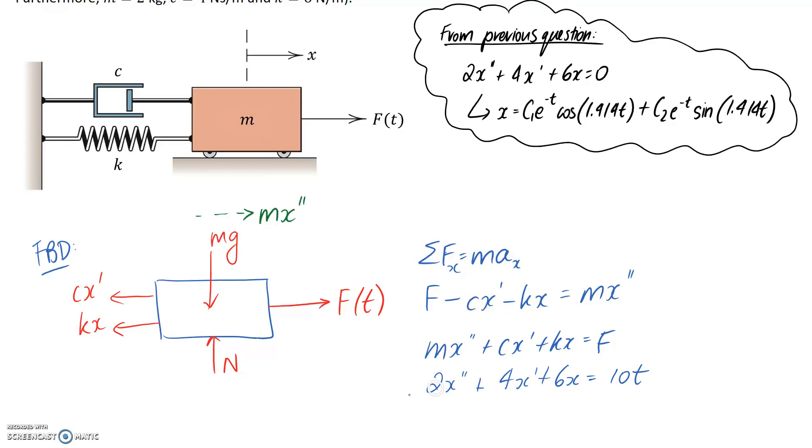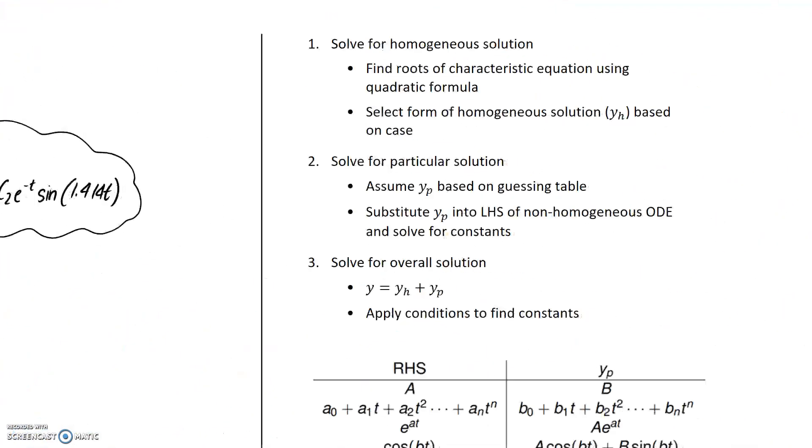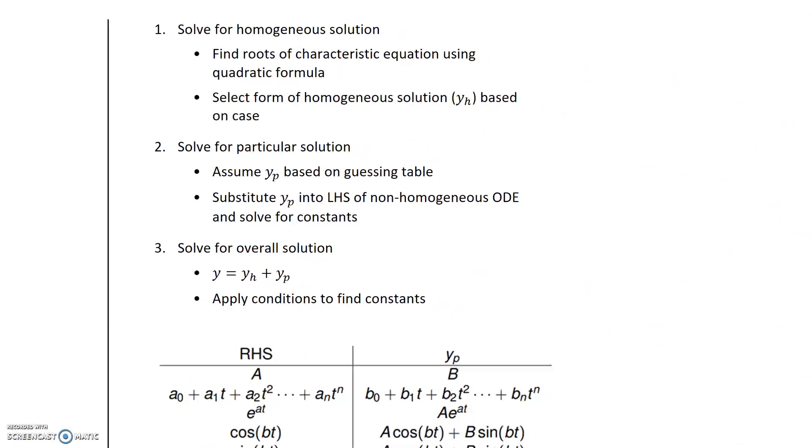We need to try and solve this equation to get x on its own, x equals something in terms of t. We can see that it is a second order equation because of the second derivative, and we can see that we have constant coefficients all on the left hand side. So the process to solve it is going to be this one here. Again, you can look at the recap video if you want some extra detail on this.